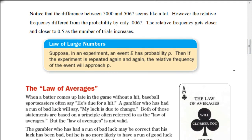Notice that the difference between 5,000 and 5,067 seems like a lot. However, the relative frequency differed from the probability by only 0.0067, or 0.67%. What's happening here is that the relative frequency gets closer and closer to 0.5 as the number of trials increases. That's what we call the law of large numbers — the more we repeat an experiment, the closer we get to the actual expected probability.